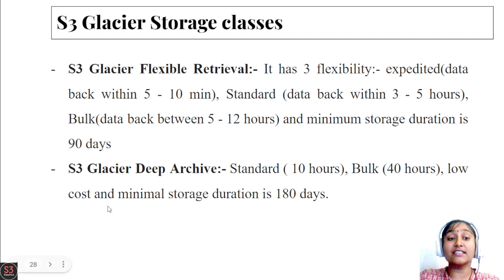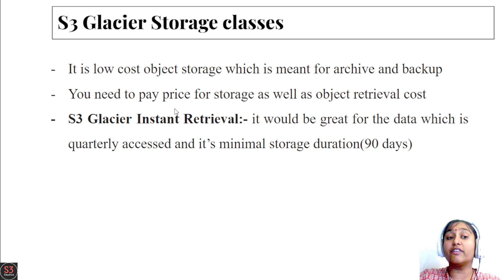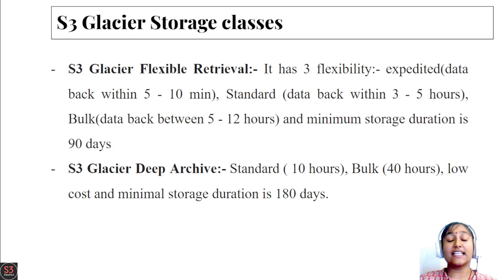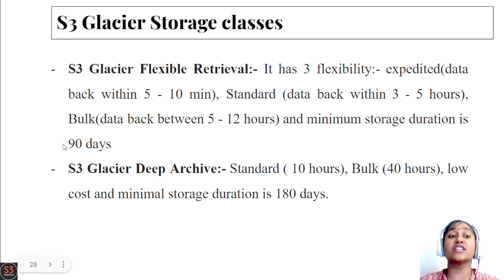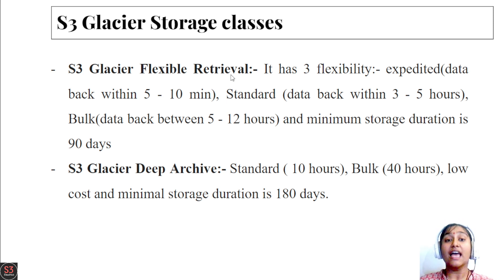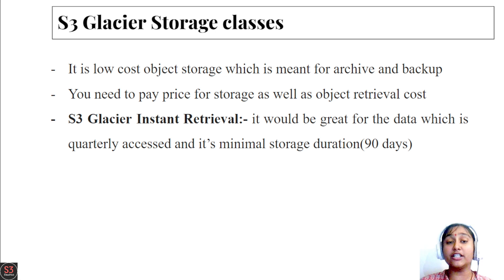Glacier Instant Retrieval provides millisecond retrieval and is great for data accessed quarterly. The minimum storage duration is 90 days. Glacier Flexible Retrieval offers three options: Expedited (data back in 5–10 minutes), Standard (3–5 hours), and Bulk which is free (5–12 hours). Minimum storage duration is also 90 days. The key difference is that Instant Retrieval returns data immediately, while Flexible Retrieval returns data within a defined time window.